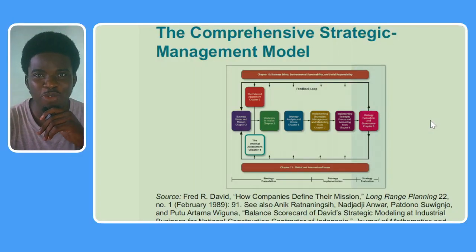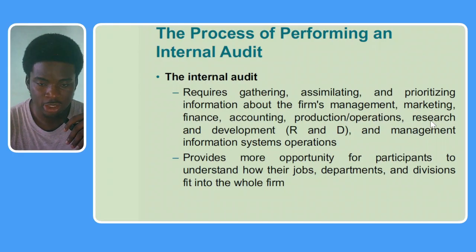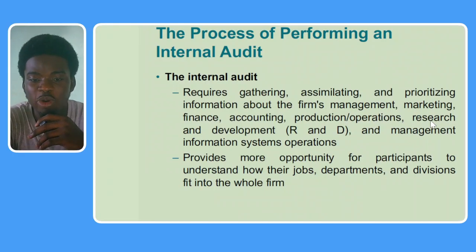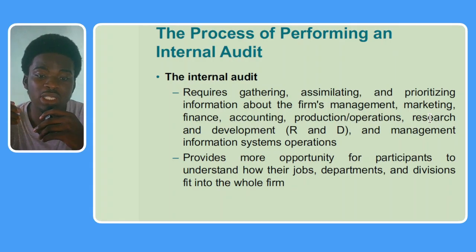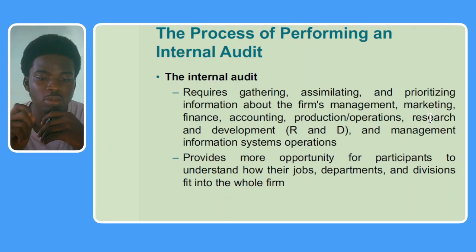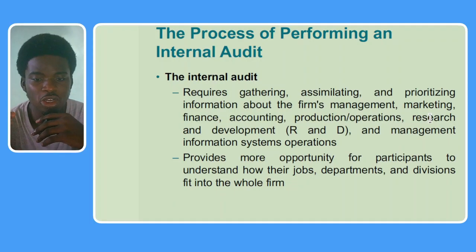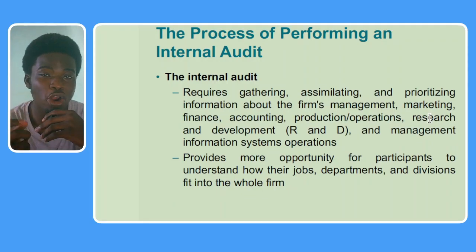Let's get down to business. The process of performing an internal audit requires gathering, assimilating, and prioritizing information about the firm's management, marketing, finance, accounting, production, operations, research and development, and management information systems. If you're going to internally audit a firm, what you need to do is break the firm down into its functional areas. You're going to gather information from these functional areas, assimilate them, and then prioritize them.